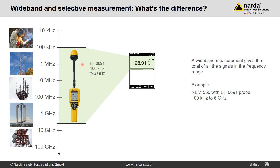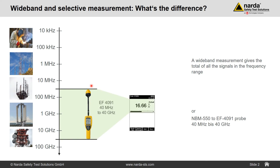The NBM cannot distinguish whether the signal comes from a television transmitter, longwave, or mobile radio — it only tells you, for example, 28.91 V per meter. If you want to change the frequency range, you connect a different probe. Like in our example here, we connect an EF4091, which covers a frequency range of 40 MHz up to 40 GHz, now also covering the point-to-point connection. It tells you that in this frequency range we have an amplitude of 16.6 W per meter.